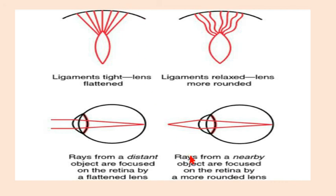When we are observing objects at a very close distance, the lens becomes rounded in shape. This rounded appearance is because the suspensory ligaments relax and the ciliary muscles contract. Ciliary muscle contraction causes the rounded shape of the lens.